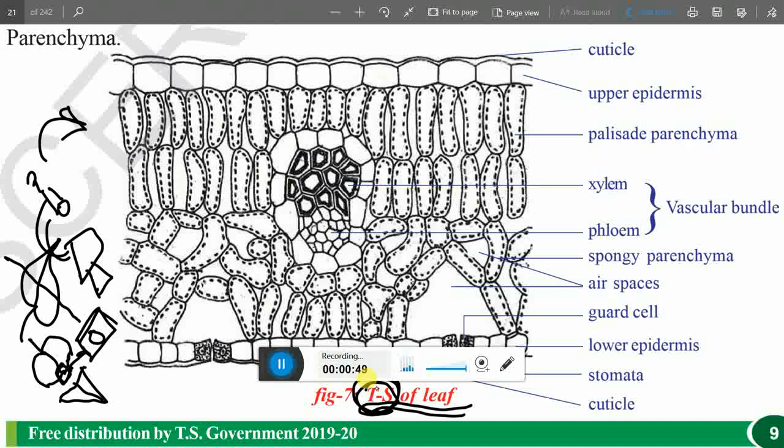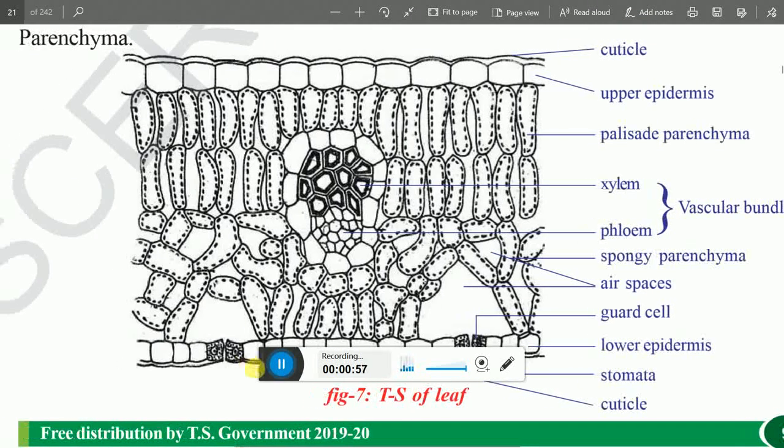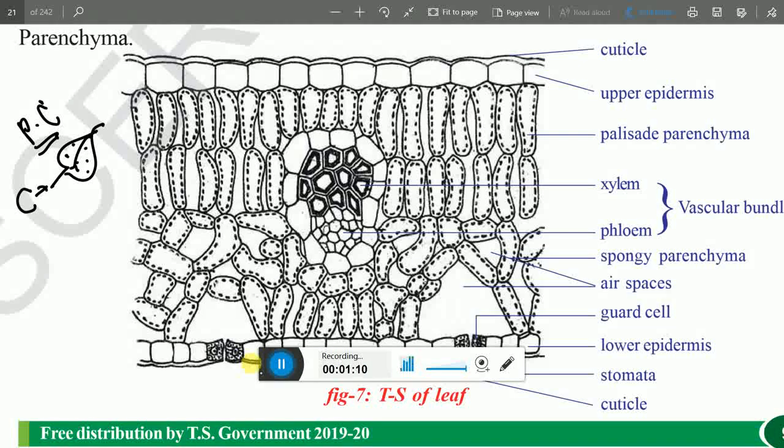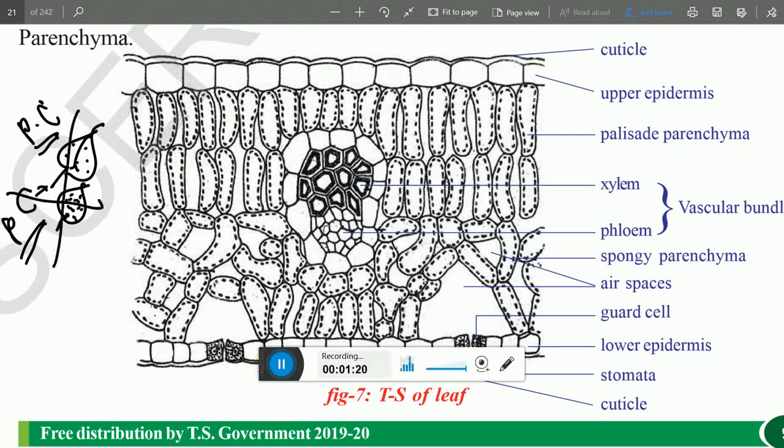So why is transverse section of leaf important? Earlier we discussed about Cavatier and Cavanto, two scientists. Cavanto said that entire leaf, chlorophyll is present. Later, Pallatier also said the same thing - entire leaf, chloroplast is present.